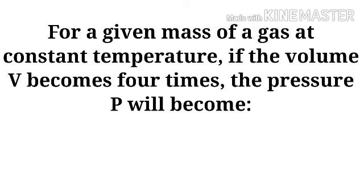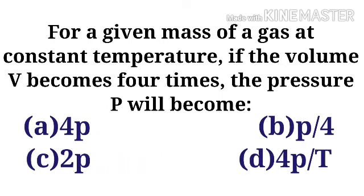For a given mass of a gas, at constant temperature, if the volume V becomes 4 times, the pressure P will become — Option A: 4P, Option B: P by 4, Option C: 2P, Option D: 4P by T.